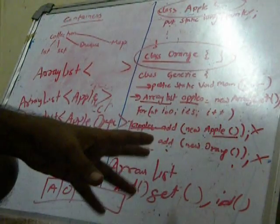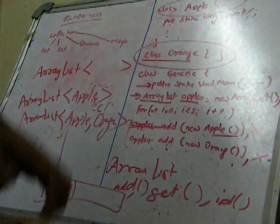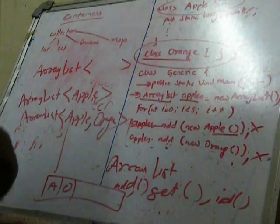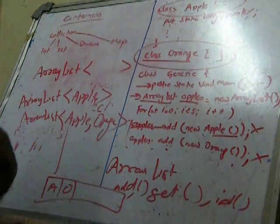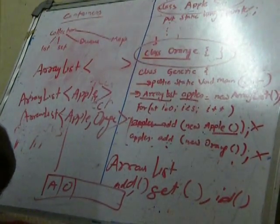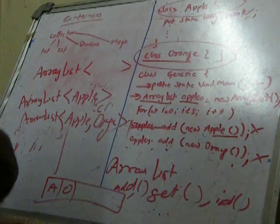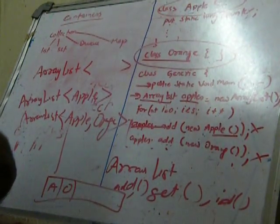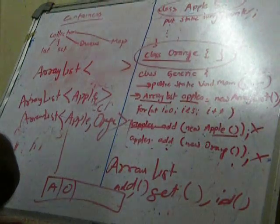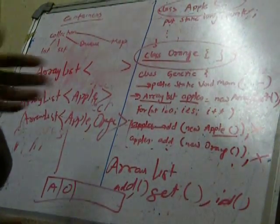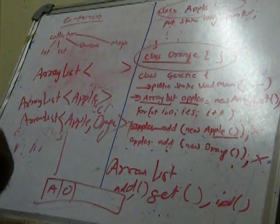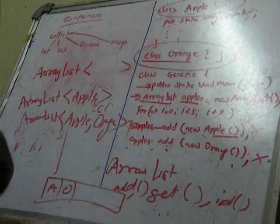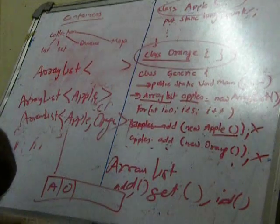Similarly another concept we can talk about is whenever we are using a container trying to access an object from a list of container, actually any container knows the kind of objects that they have. For example if I have a list, the list knows the type it holds, it has the information. It does not need to cast it every time I call a get from the item from the list. We do not need to upcast it, it will work automatically.